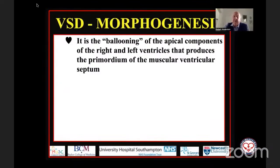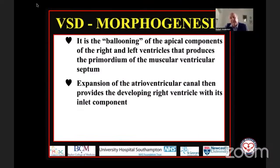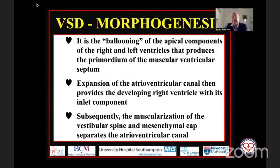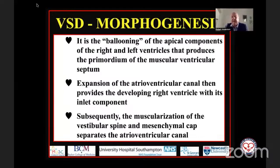You've now seen how ballooning produces the apical components of both ventricles. To get an inlet to the right ventricle, we have to have expansion of the atrioventricular canal. Then we see the first key point to one of the questions I want to answer, because as the atrioventricular canal separates into the right and left sides, we also see muscularization of the vestibular spine and the mesenchymal cap. Let's look at these stages.